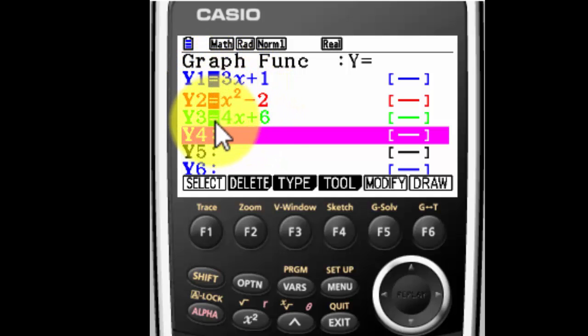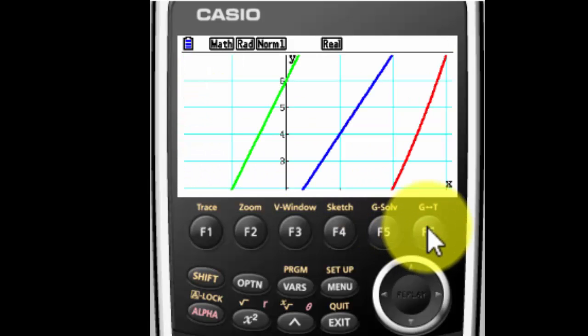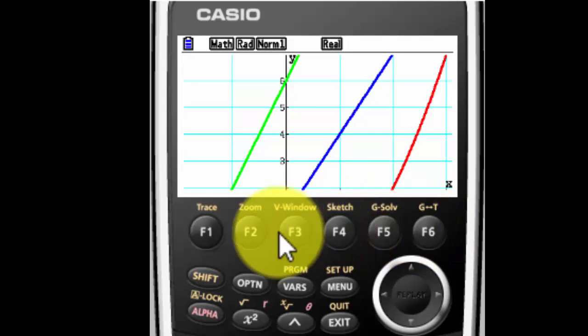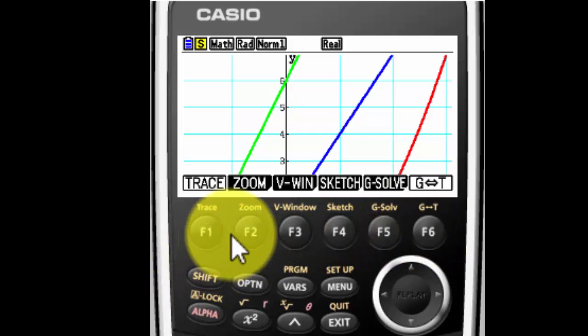You notice all three of these are highlighted. The equal signs are highlighted. That means they're all active. I can press Draw and there's my three lines. Not exactly what I wanted to see, so let's go ahead Shift-Zoom.